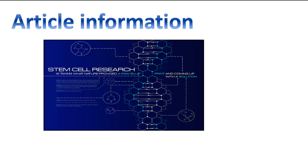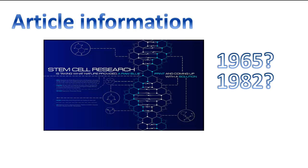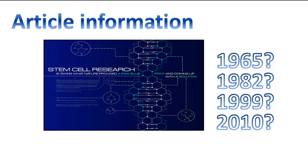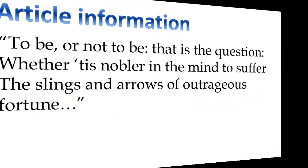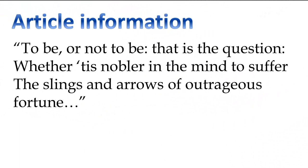When doing research, different pieces of information are important to different disciplines. In the sciences, it is important to know how current an article is. When a researcher references another article, he needs to let his reader know the year the article was published.